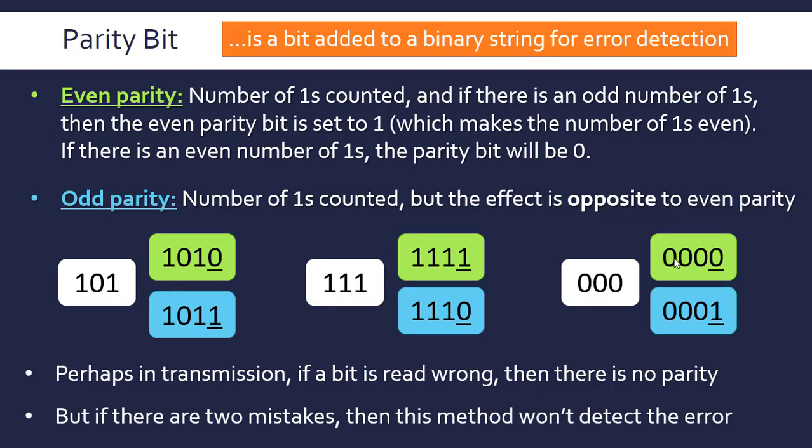The issue is if there are two mistakes, this method won't catch it because it's remaining either odd or even depending on what it was to begin with. Two mistakes balance it out again, so this is a very simple way to detect errors but not particularly effective.